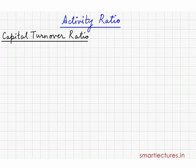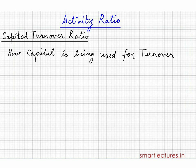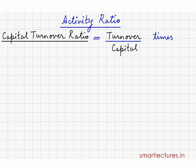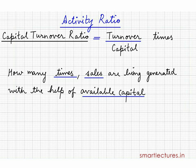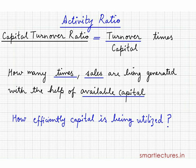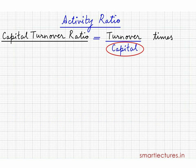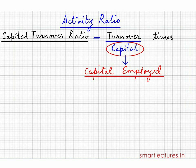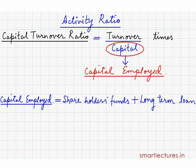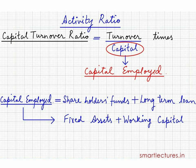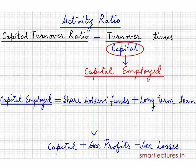First of all we'll take capital turnover ratio. It establishes the relationship between capital and turnover — basically it tells how the capital is being used for turnover. The formula is turnover upon capital, expressed in times, meaning how many times sales are being generated with the help of available capital — how efficiently capital is being utilized. Capital in this ratio means capital employed. Capital employed equals shareholder funds plus long-term loans. Alternatively, fixed assets plus working capital. Shareholder funds equal capital plus accumulated profits minus accumulated losses.